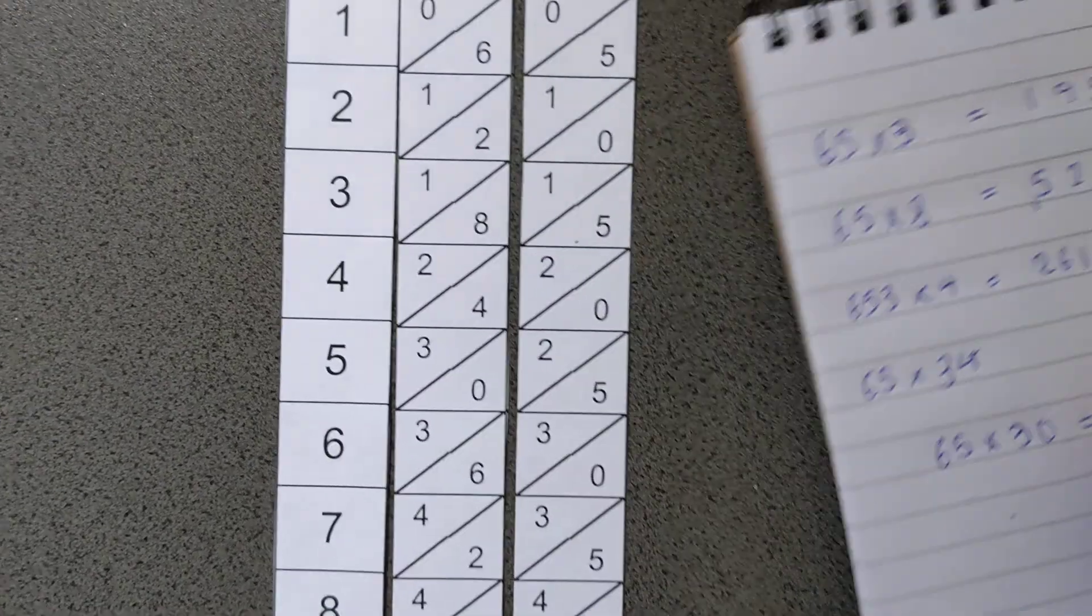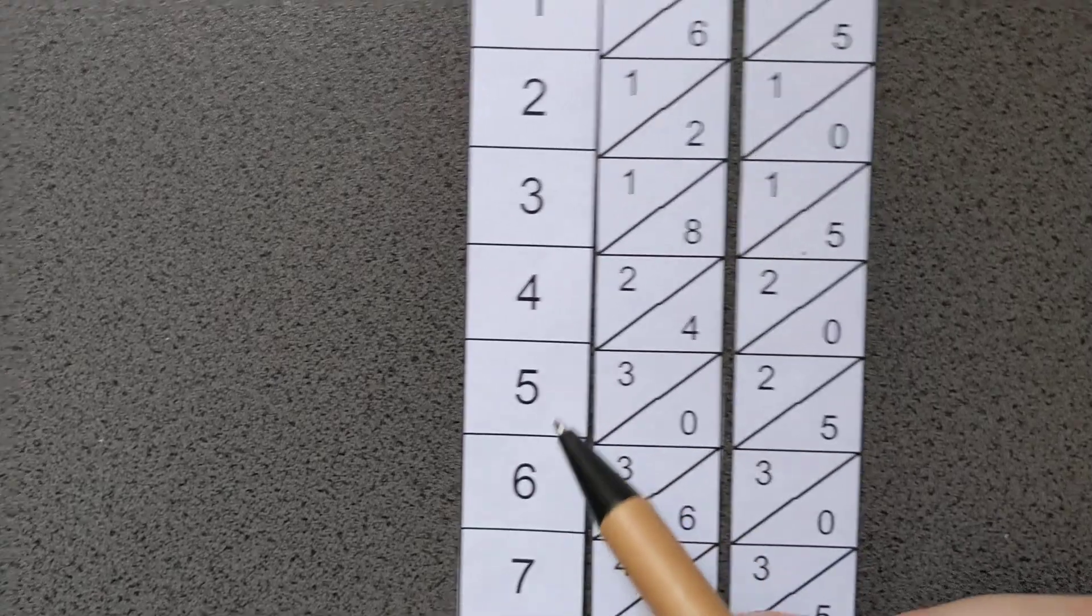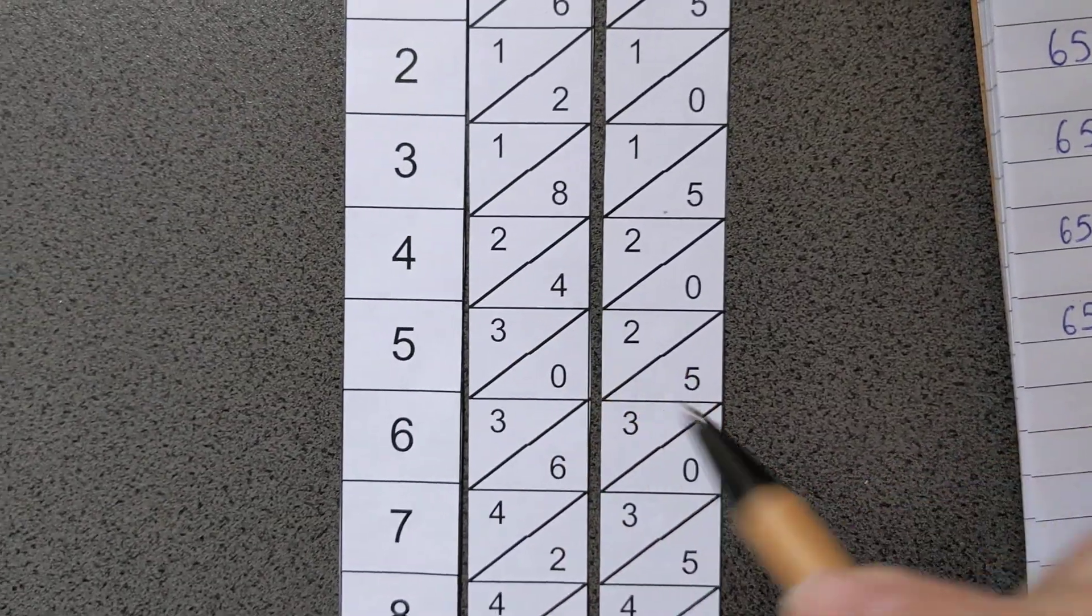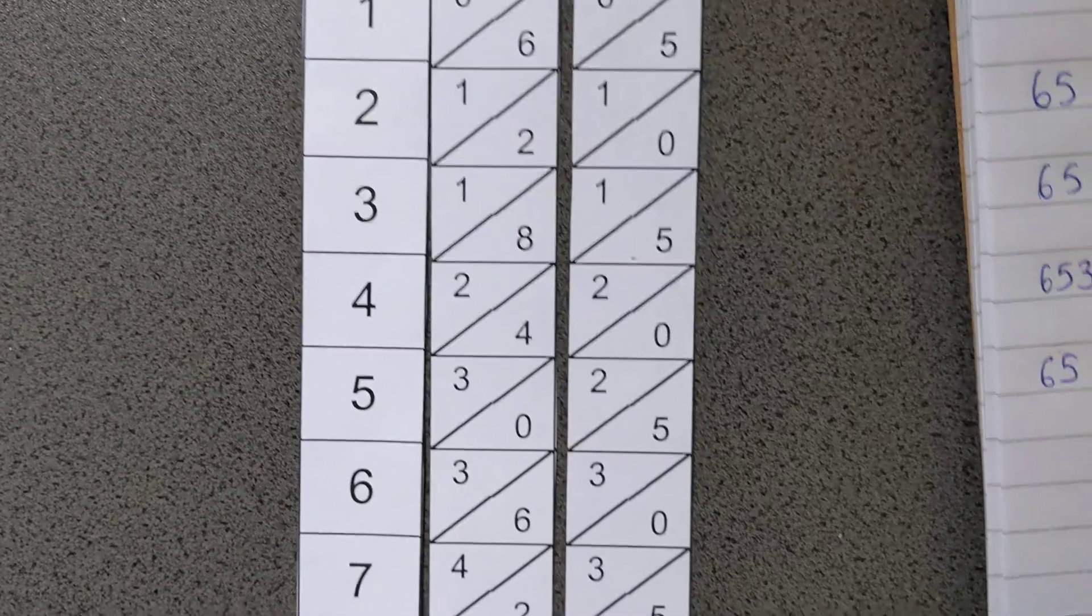And then what we do is we then do the 4, so 4 lots of 65 are 260, so we'd add on the 260.